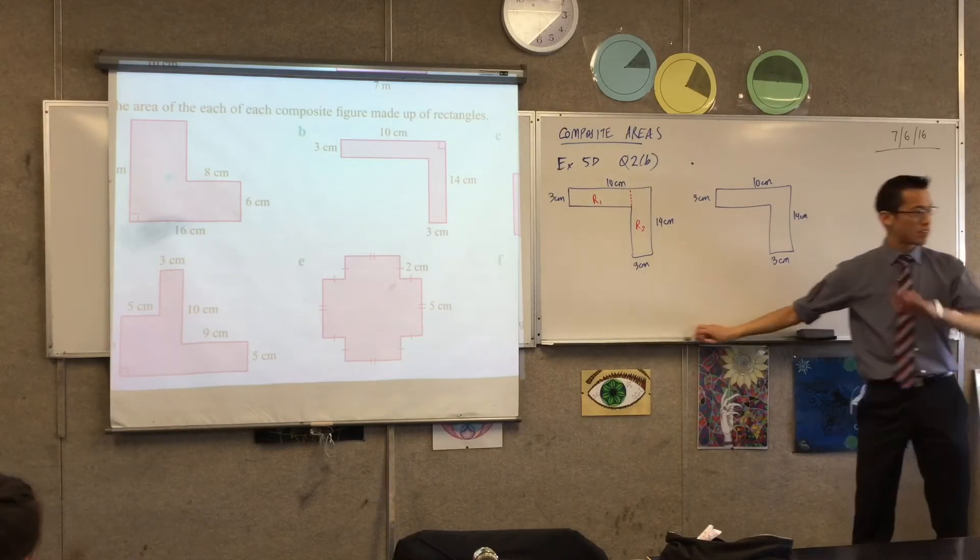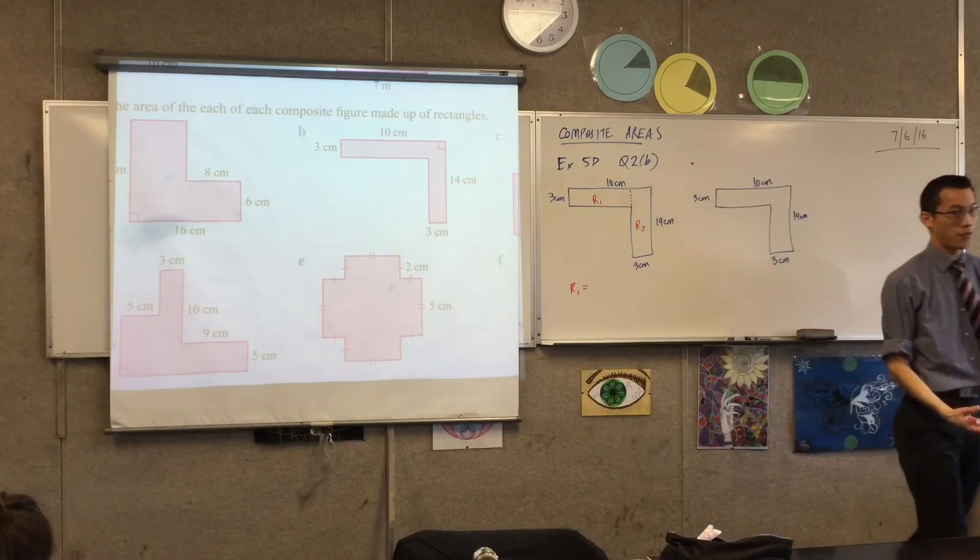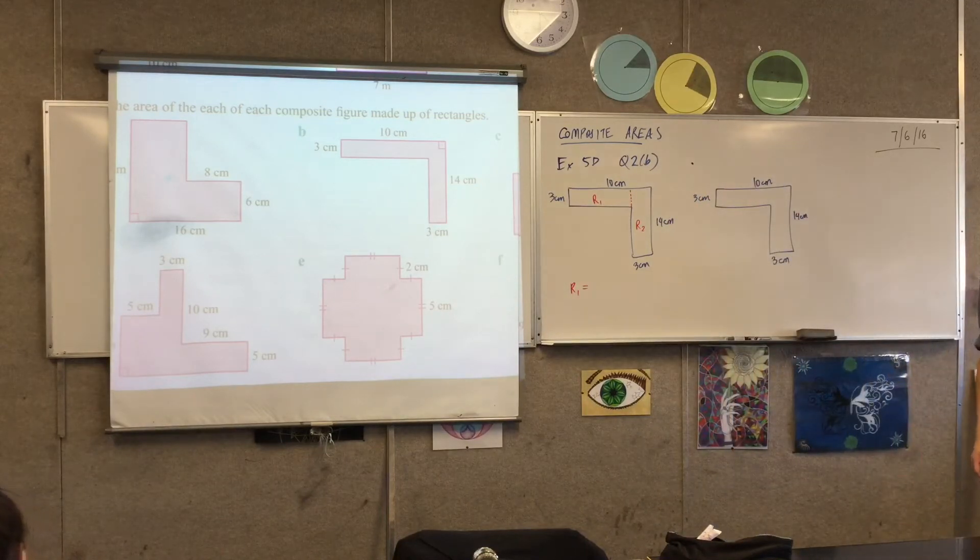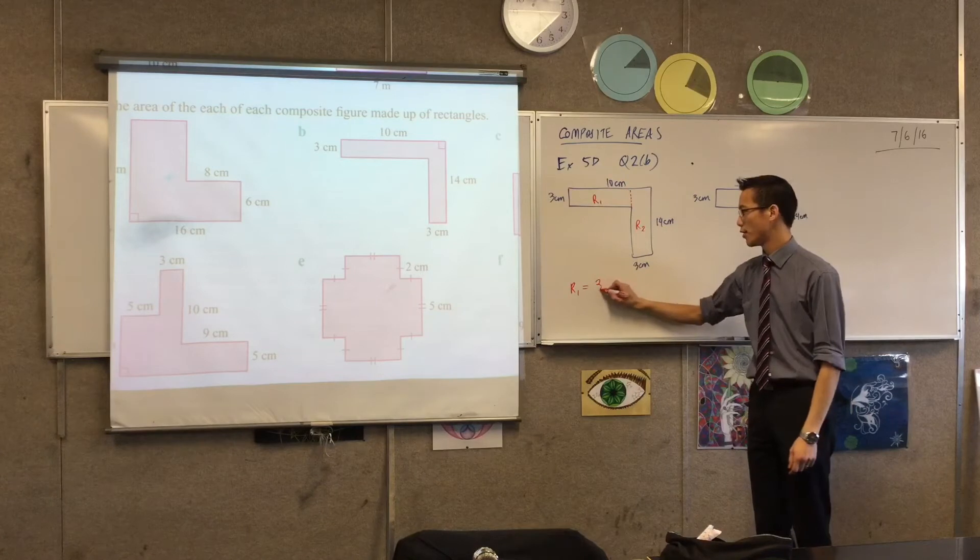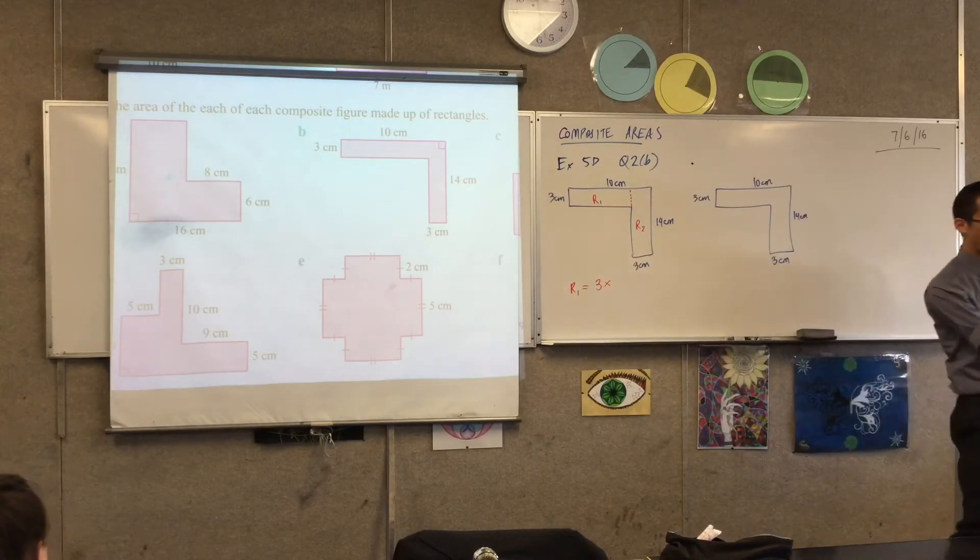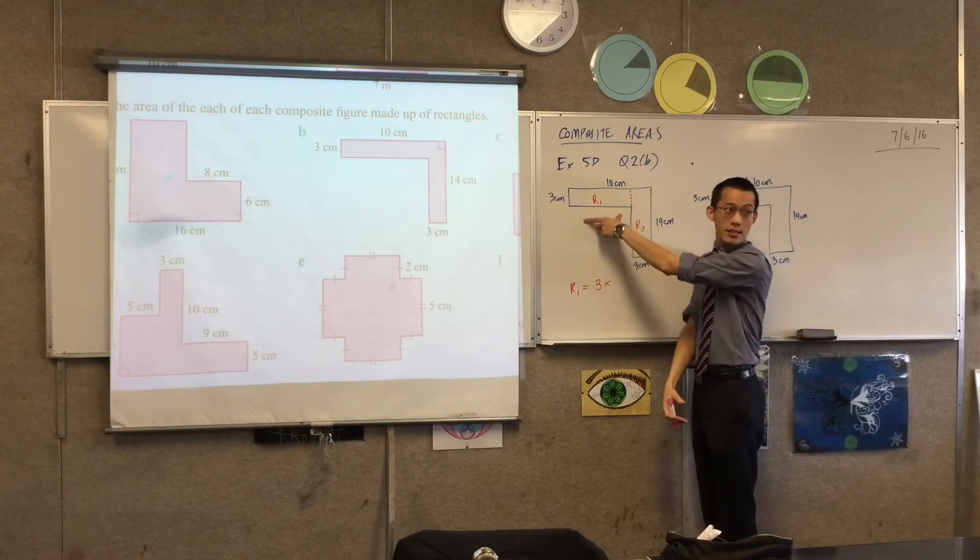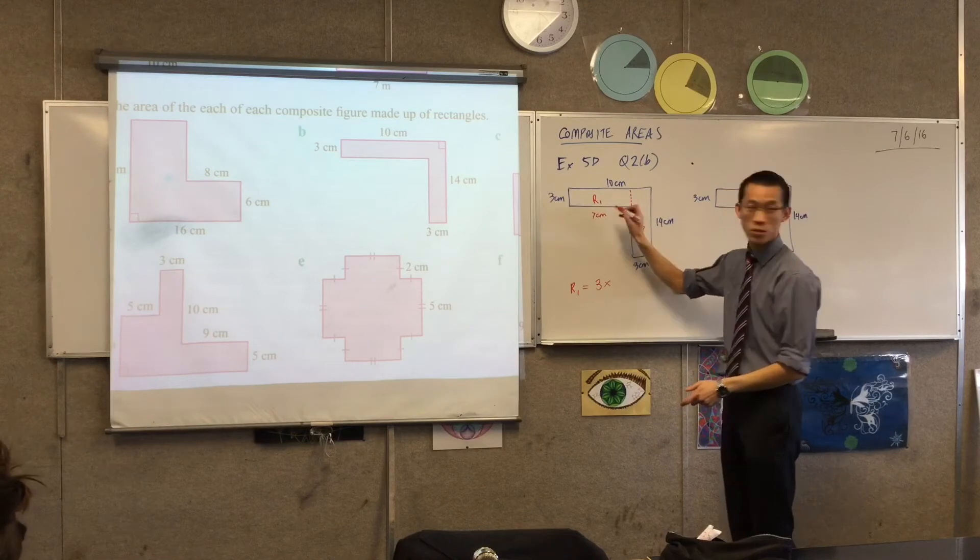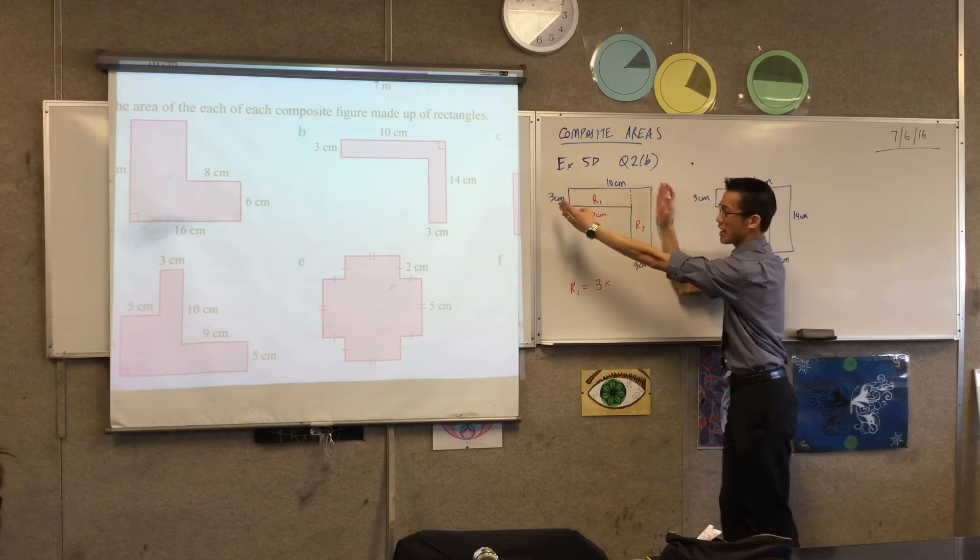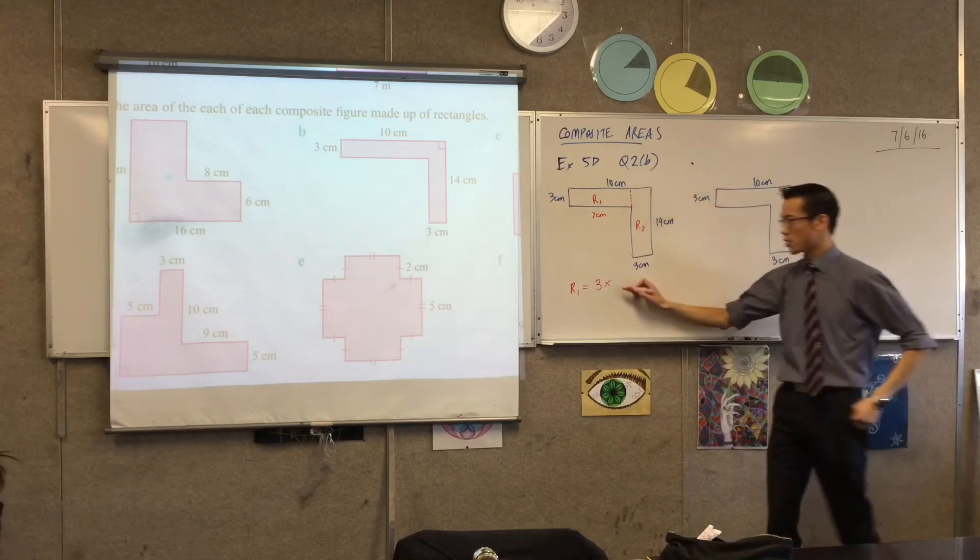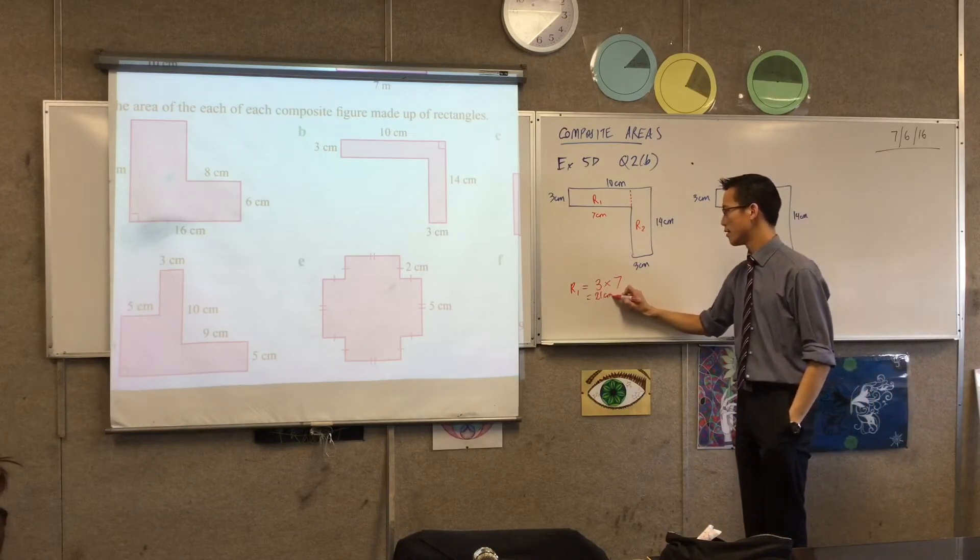Now that I've got some areas designated, I'm just going to work them out one at a time. So, the area of R1, well, what's the formula for the area of a rectangle? Length times breadth. Length times breadth, right? So, I have a length here, that's three. I'll write that down first. I don't have a breadth that's been actually put onto the diagram for me. So, I kind of have to work it out. It's this distance here, and it's 7. How did you work out that it was 7? Good. So, you've got this whole length of 10. And you're taking away the 3 that gets told you down here, right? So, 3 by 7. 3 by 7 is not hard. So, this is 21 square centimeters.